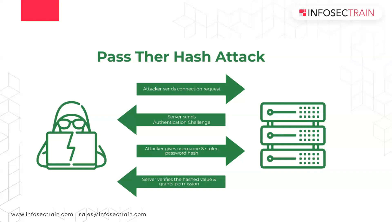When we are talking about the working of Pass the Hash, the attack works in two steps: extraction of hashes, and using the hashes to gain access to the compromised machine or another machine. The very first thing you have to do is find out the password and then do credential dumping. Let's try how we can perform a Pass the Hash attack.